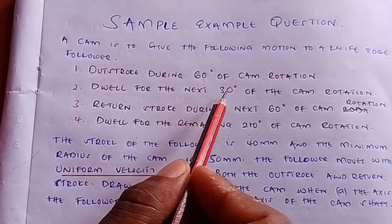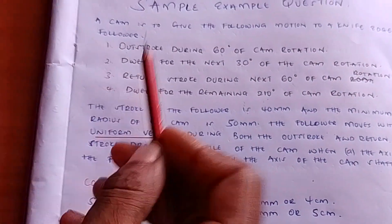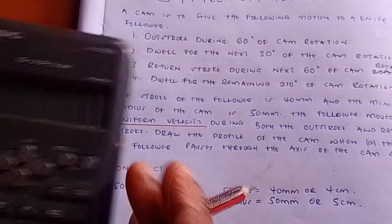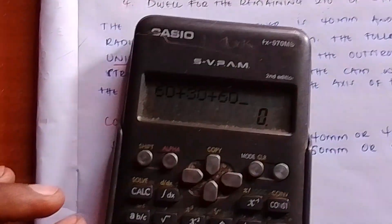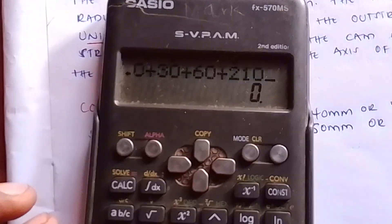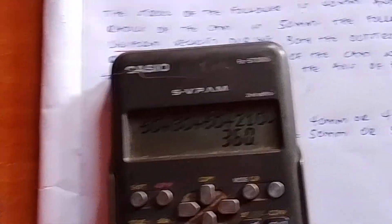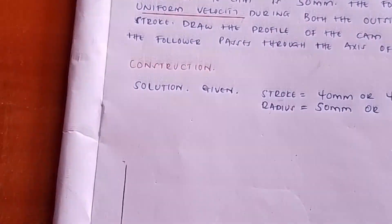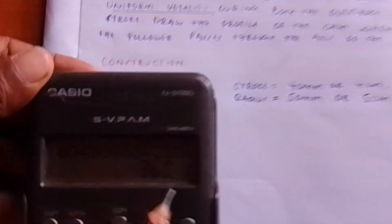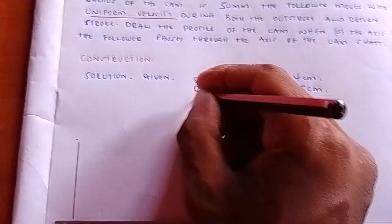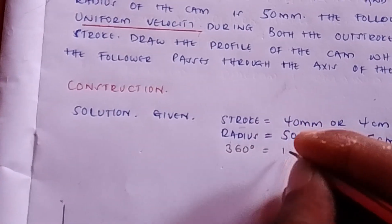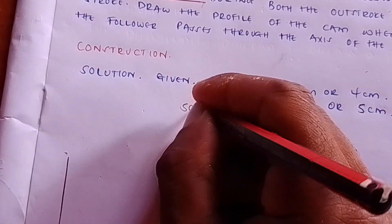We need to convert 360 degrees into centimeters. If we add 60 + 30 + 60 + 210, we get 360 degrees — the total motion through outstroke, dwell, return stroke, and dwell. We want to convert these 360 degrees into a straight line. My scale will be: 360 degrees equals 18 centimeters. That is our scale.